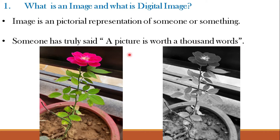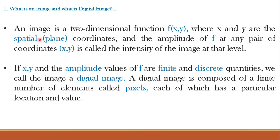In place of a thousand words, one image explains everything. An image is a two-dimensional function mathematically, f(x, y), where x and y are the spatial or plane coordinates, and the amplitude of f at any pair of coordinates x and y is called the intensity of the image at that point. x represents different rows, y represents different columns, and f is the intensity or gray level value at that point. If x, y, and the amplitude values of f are finite and discrete, we call the image a digital image. A digital image is composed of a finite number of elements called pixels, each with a particular location and value.